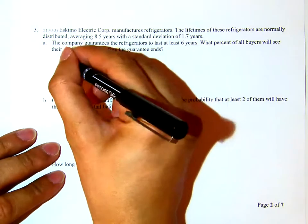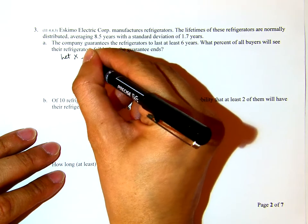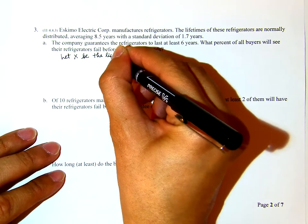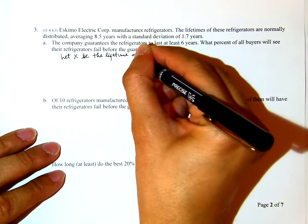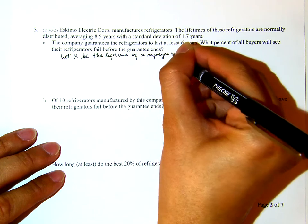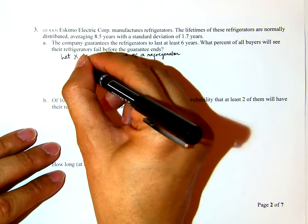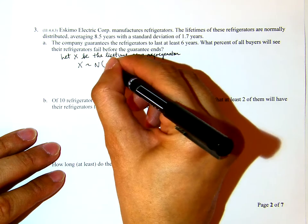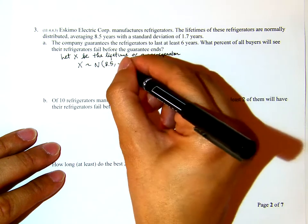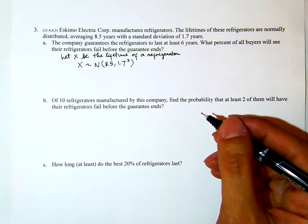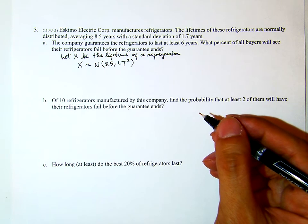Let's define the variable first. Let X be the lifetime of a refrigerator. Then X will be normally distributed with a mean of 8.5 years and standard deviation 1.7 — I write 1.7 squared because that's the position for variance.